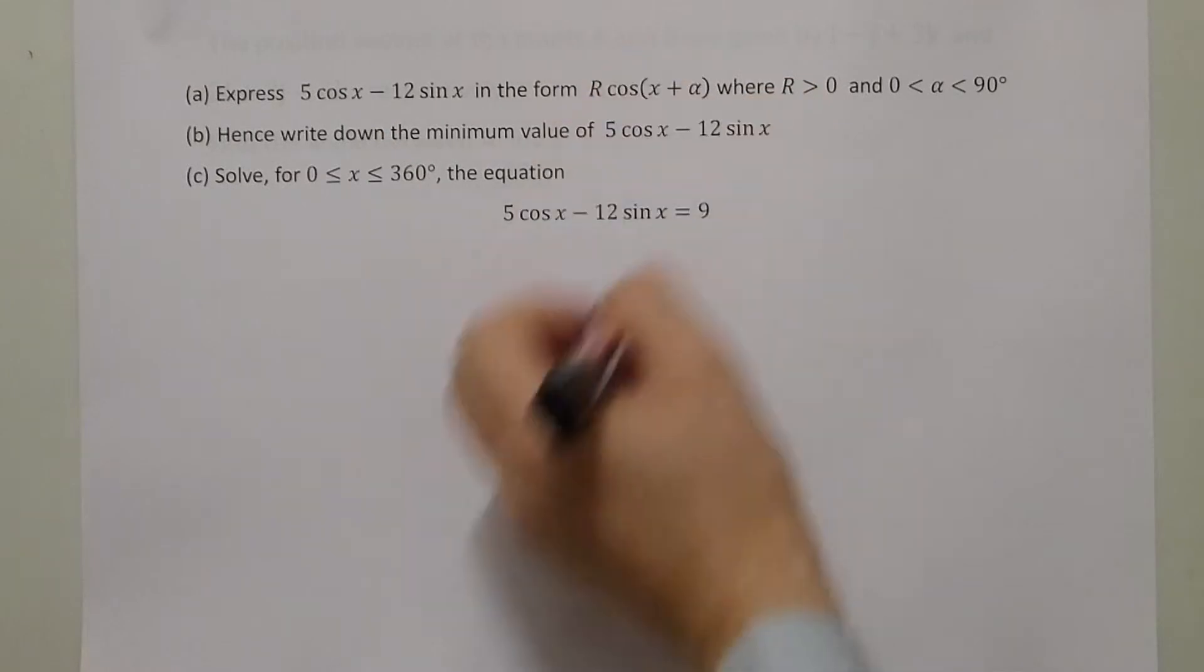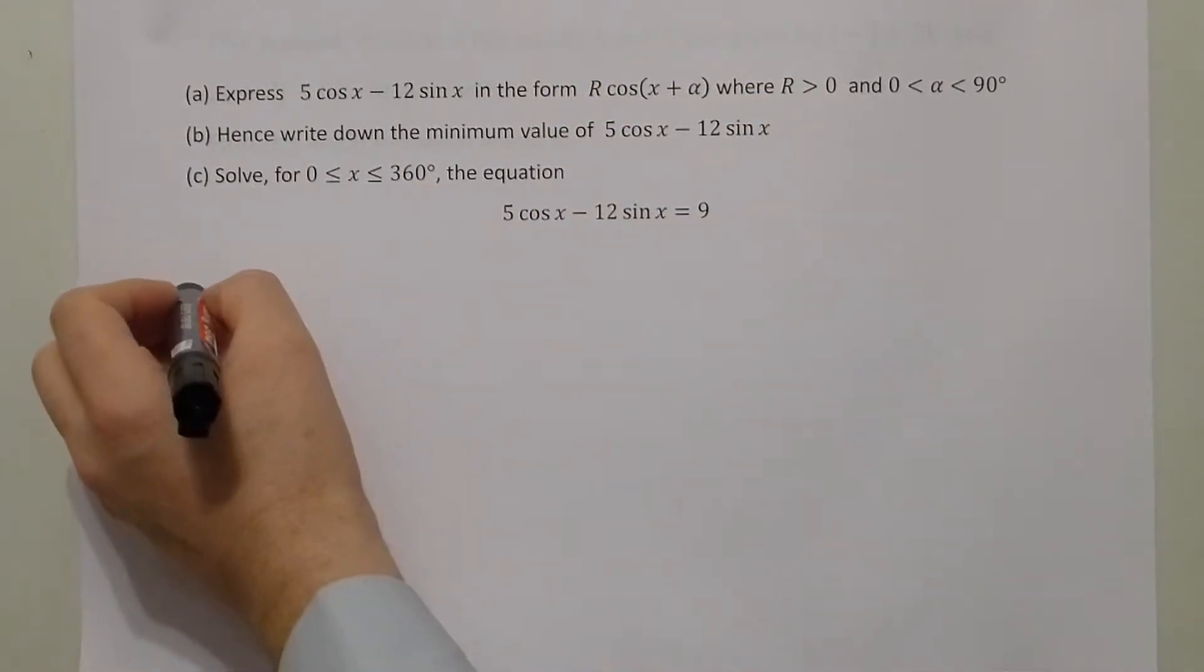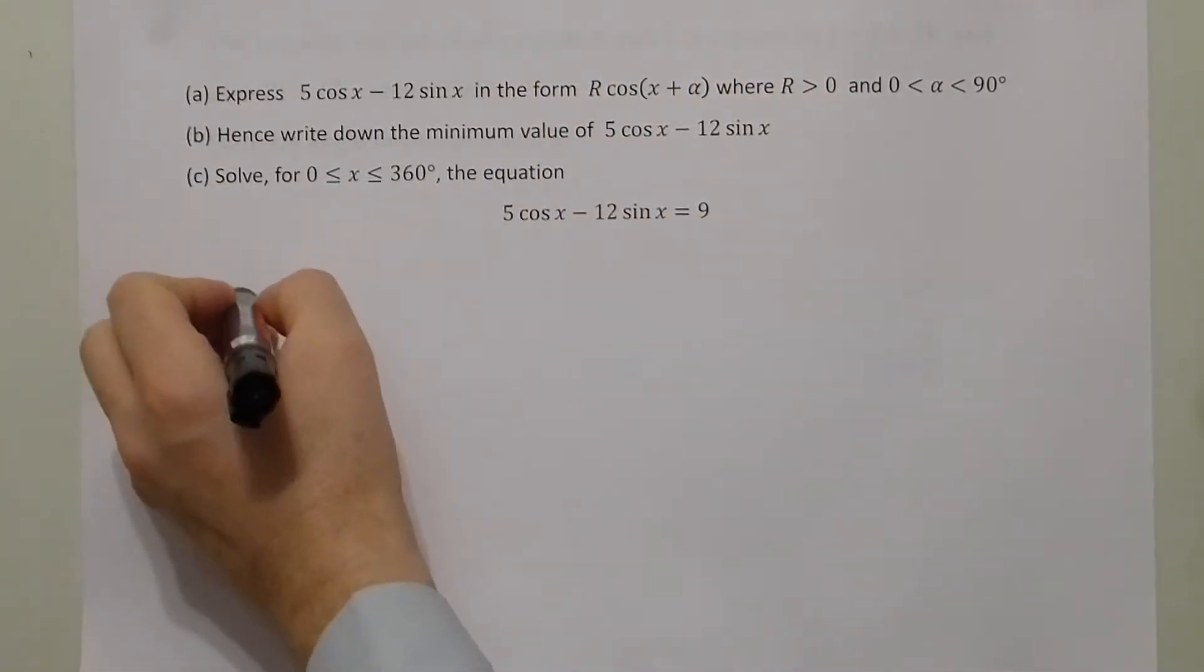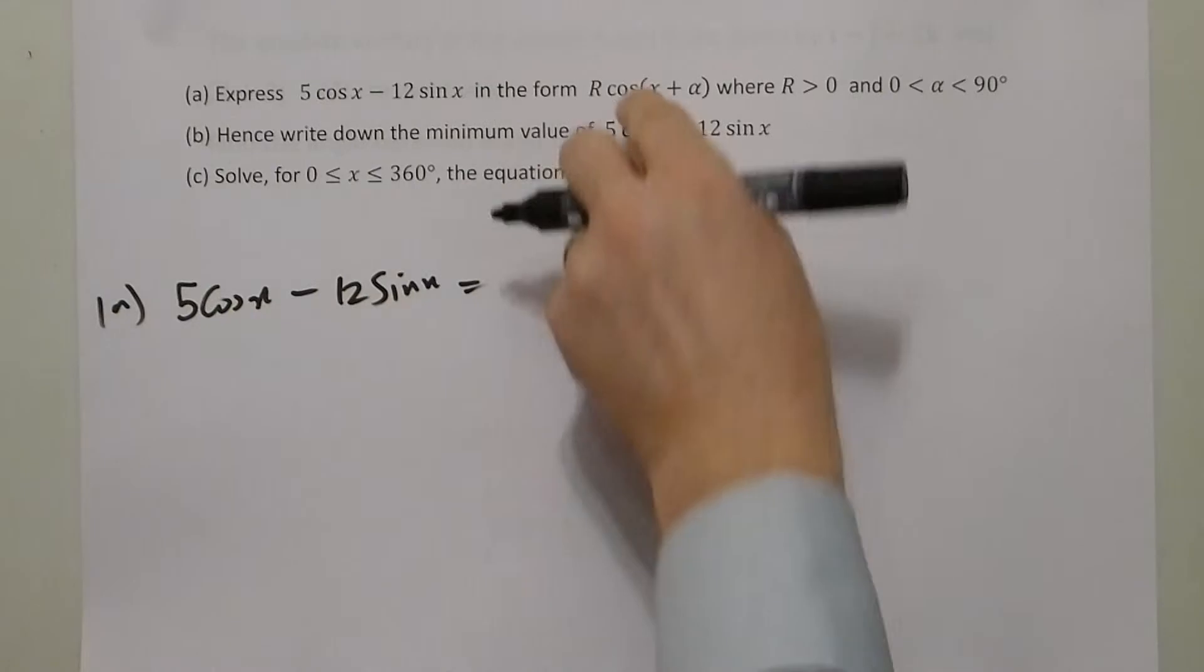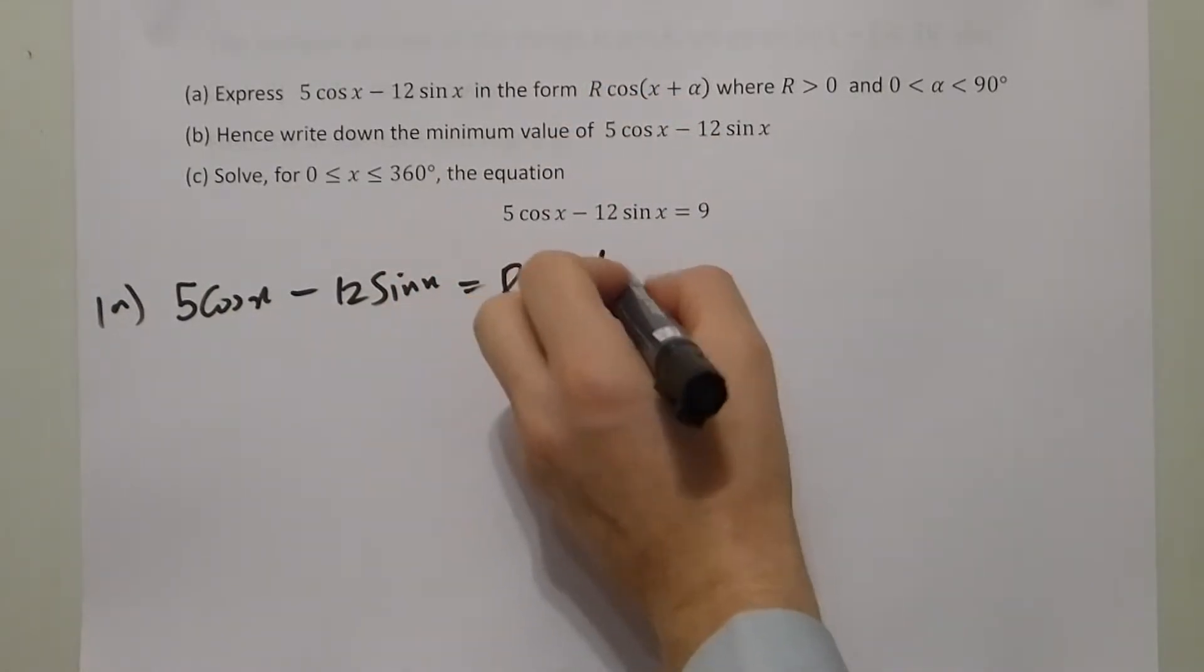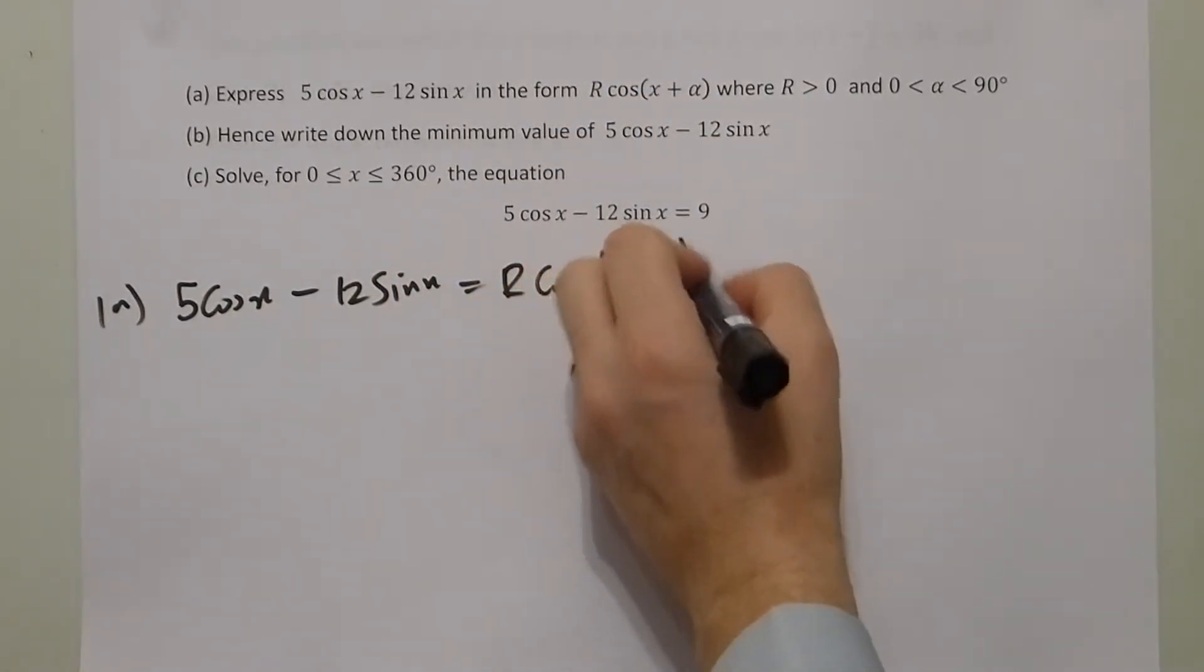First of all, to express as R alpha, we have that 5 cos x minus 12 sin x must equal R cos(x + α).